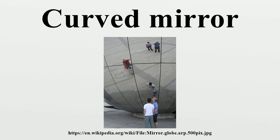A concave mirror, or converging mirror, has a reflecting surface that bulges inward. Concave mirrors reflect light inward to one focal point. They are used to focus light. Unlike convex mirrors, concave mirrors show different image types depending on the distance between the object and the mirror.